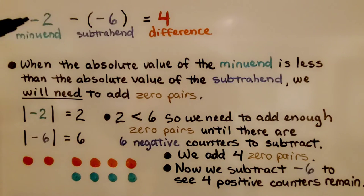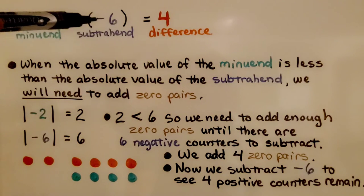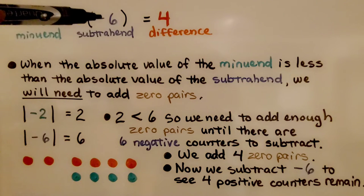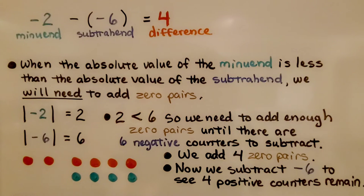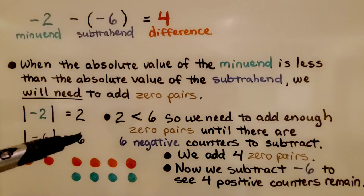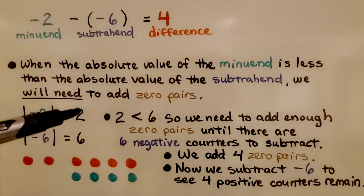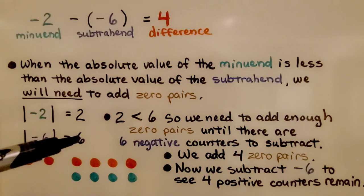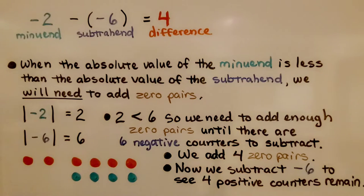Here our minuend is negative two and we're subtracting negative six as the subtrahend. When the absolute value of the minuend is less than the absolute value of the subtrahend, we will need to add zero pairs. The absolute value of negative two is two — it's two jumps away from zero. The absolute value of negative six is six — it's six jumps away from zero. Two is less than six, so the minuend's absolute value is less than the subtrahend's absolute value, and we are going to need zero pairs.